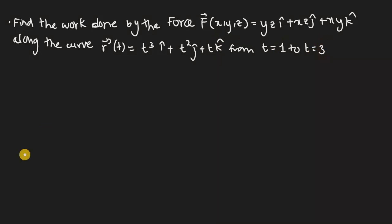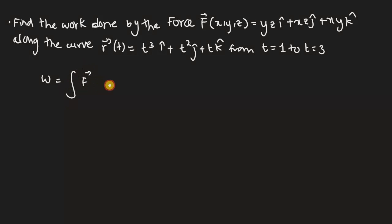To find the work done, this is the formula you're going to use. You're going to find the integral of the vector function and then dot product it with the derivative of that vector function.